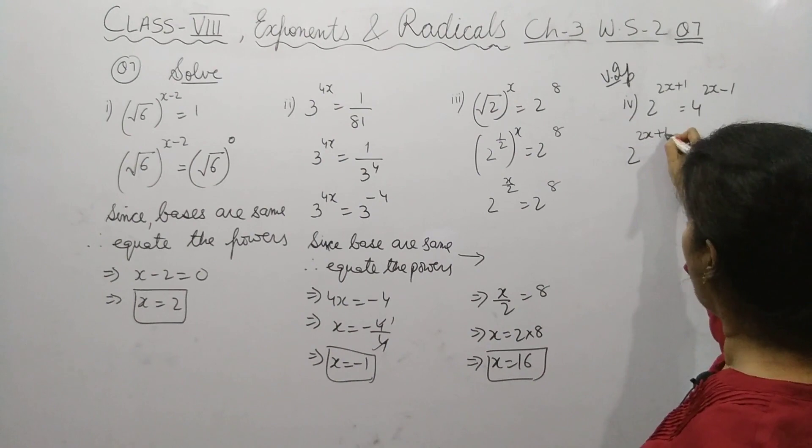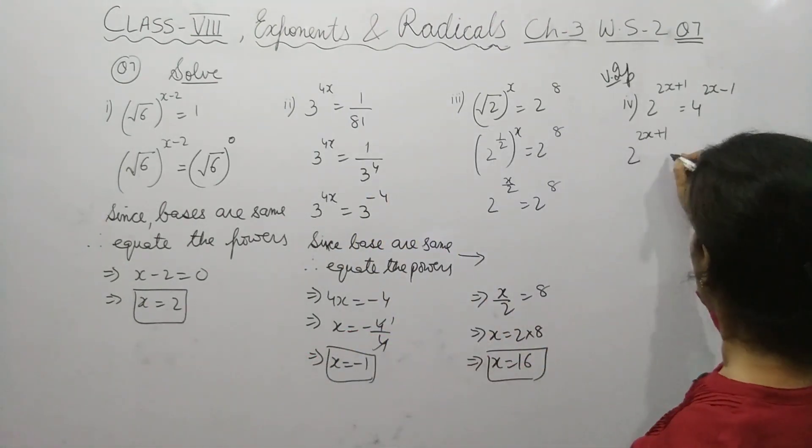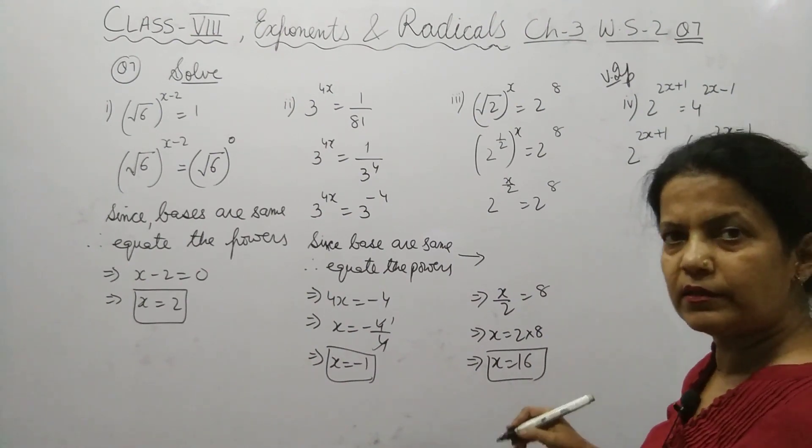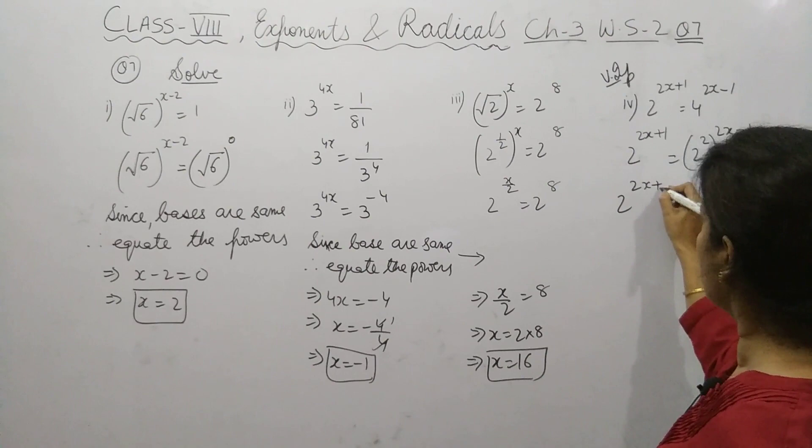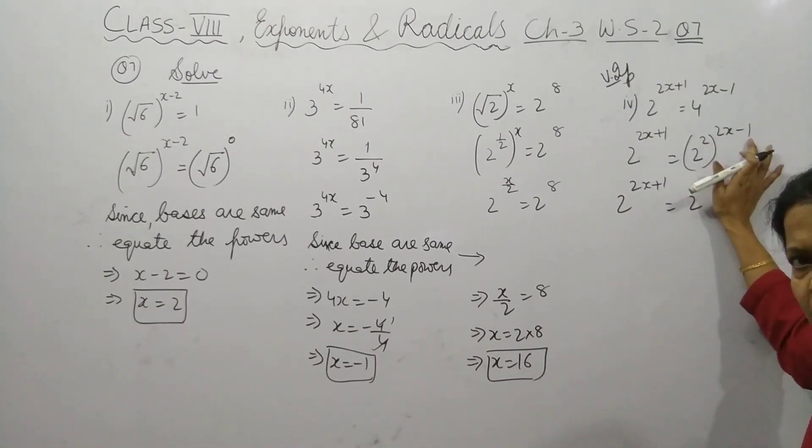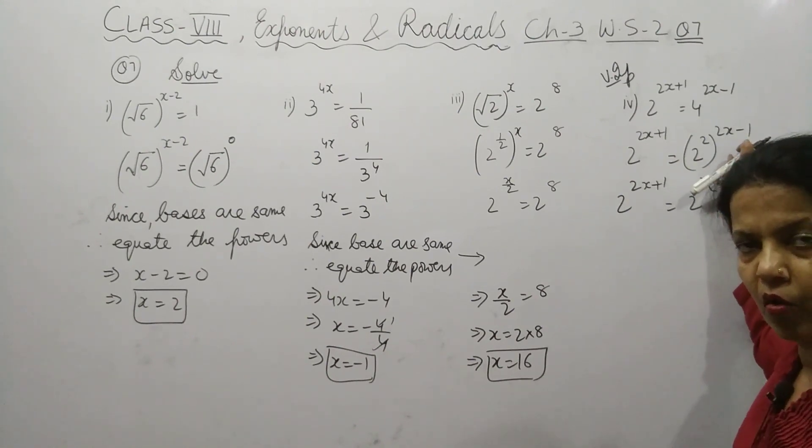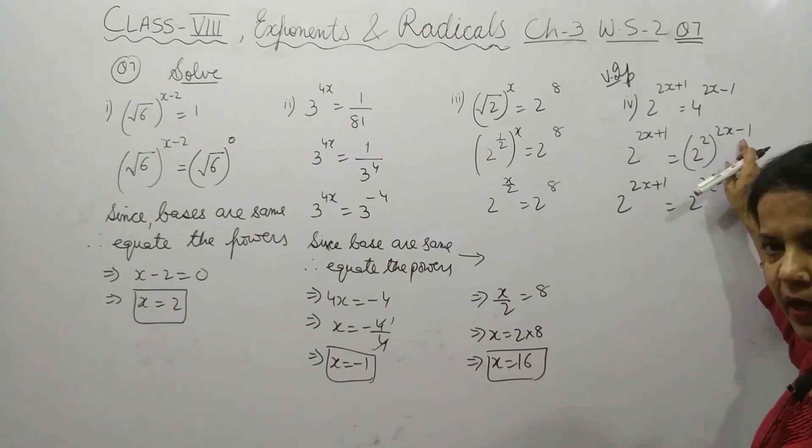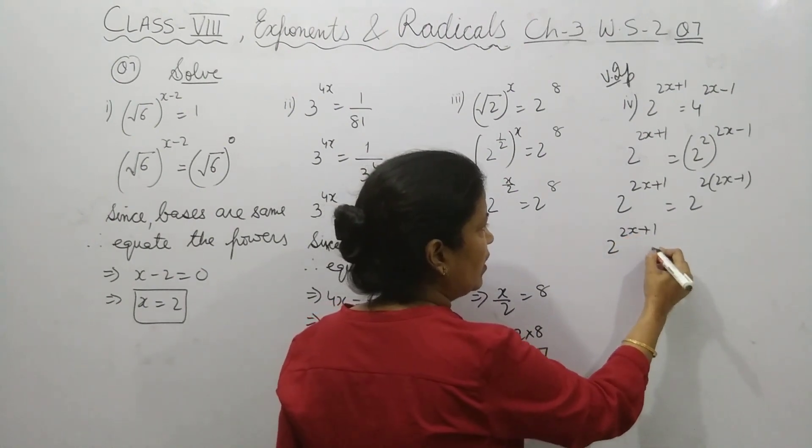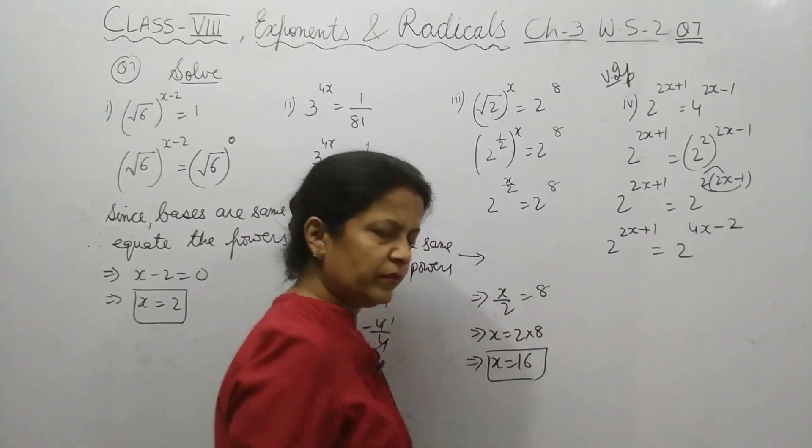2 power 2x plus 1. This 4, can we convert it in the 2 power? Yes. So 4 becomes 2 power 2, and outside is 2x minus 1. Now how will you solve this part? 2 multiply with whole power. Multiply 2 with the whole power. So it will be 4x minus 2.